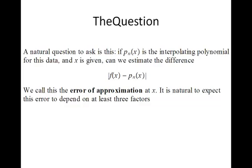The question, a natural question to ask is this. If we know the interpolating polynomial and a given x is presented, can we estimate the difference between the original function and the interpolating polynomial at the function? We call this, the absolute value here, of this difference, the error of approximation at x.